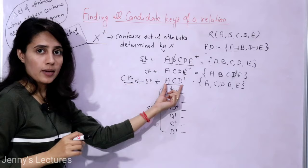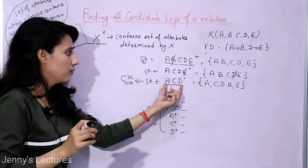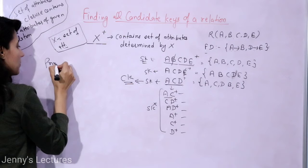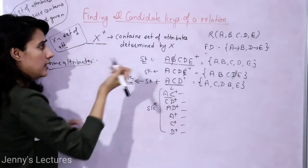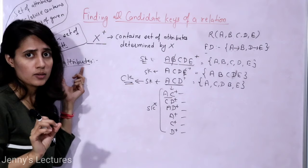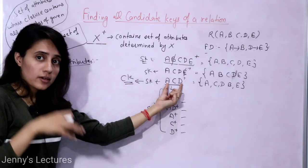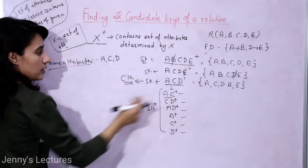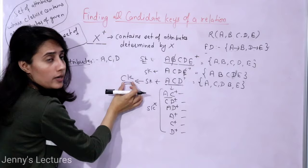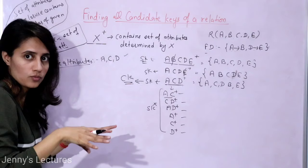After checking, none of the proper subsets of ACD is a super key, so ACD is a candidate key. Now a key term: prime attributes are those attributes which are part of a candidate key. At this point, the only candidate key found is ACD, so the prime attributes so far are A, C, and D.